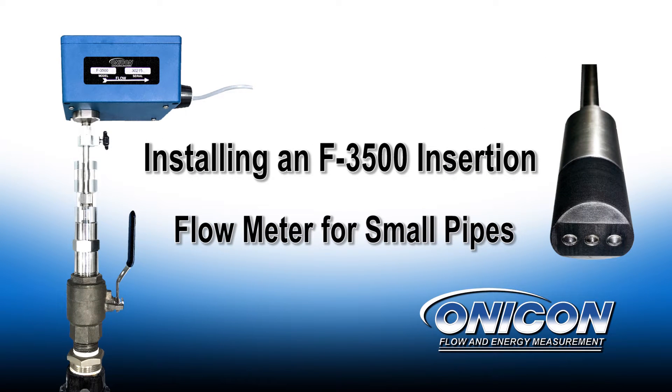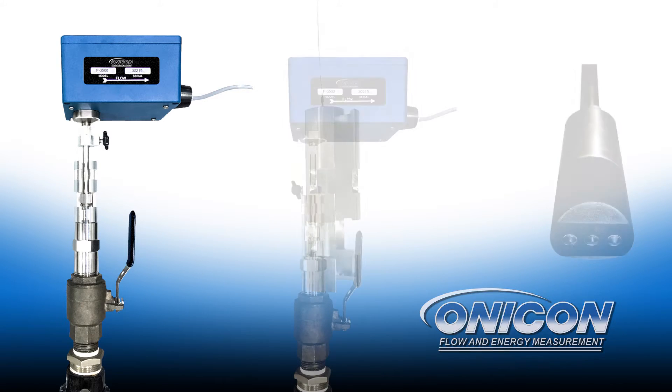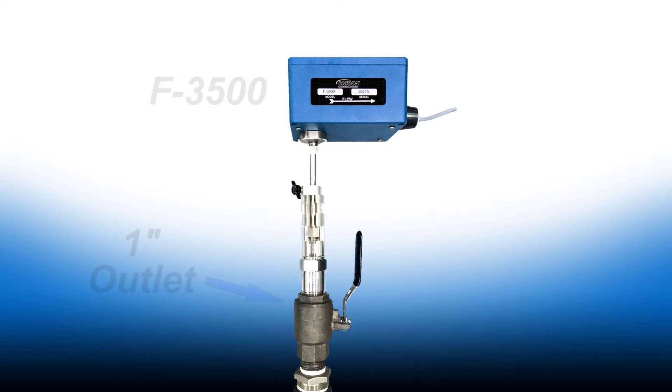Installing an F3500 insertion electromagnetic flow meter for small pipes using the provided insertion depth and alignment tool. This video assumes that the F3500 has already been threaded into the one-inch outlet on the pipe.